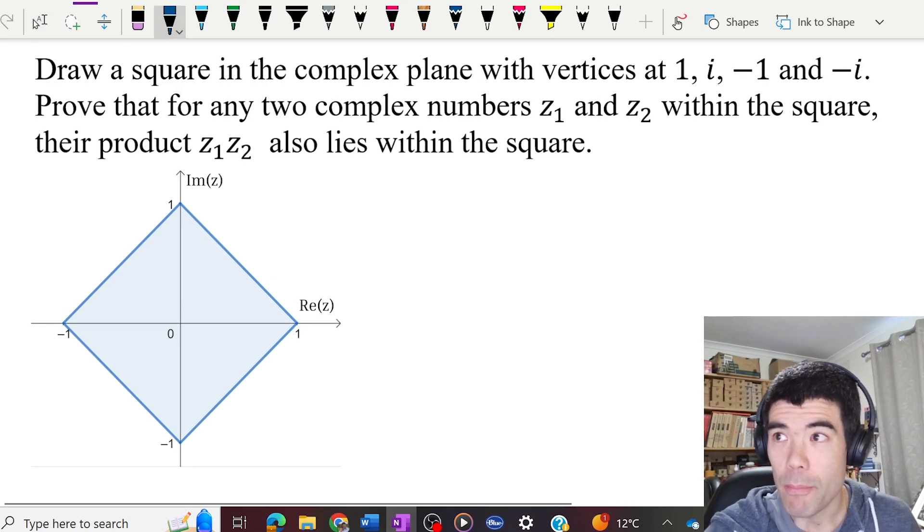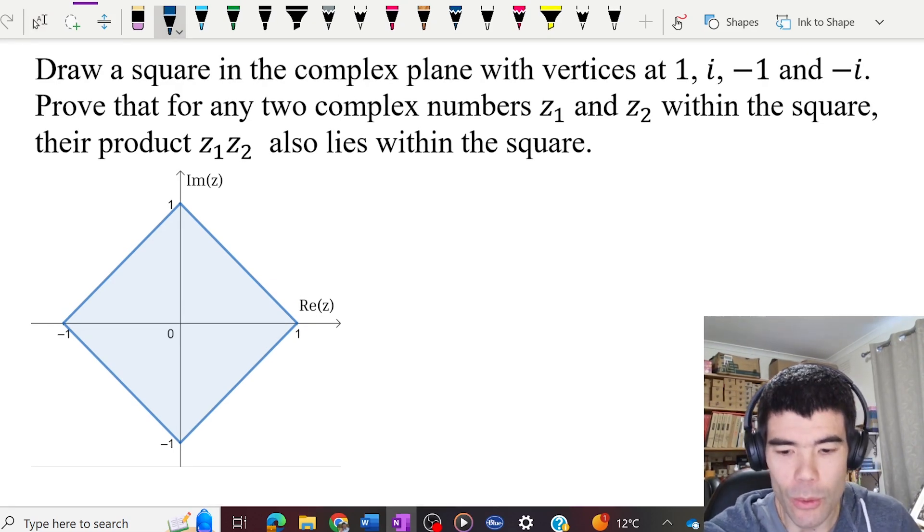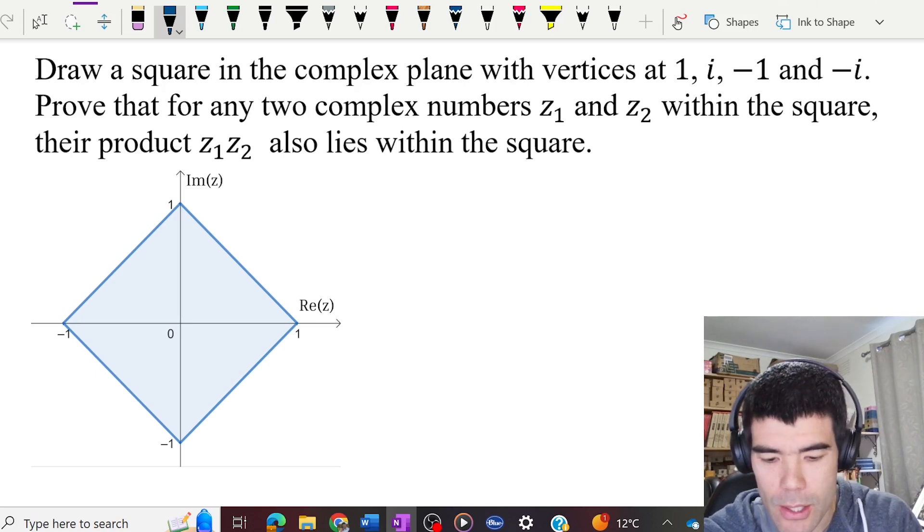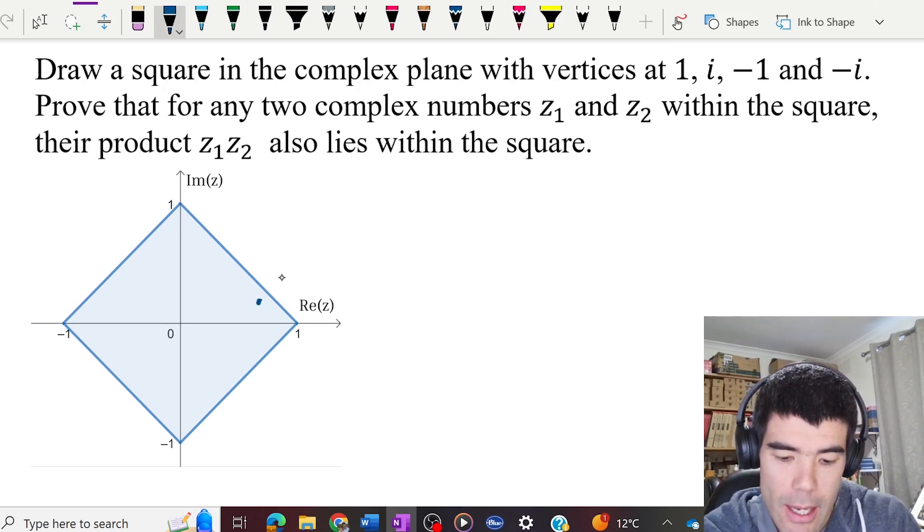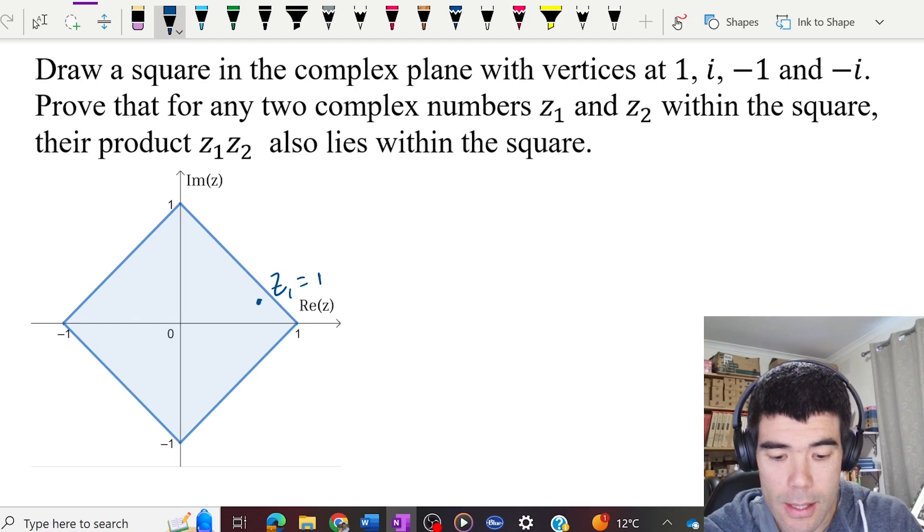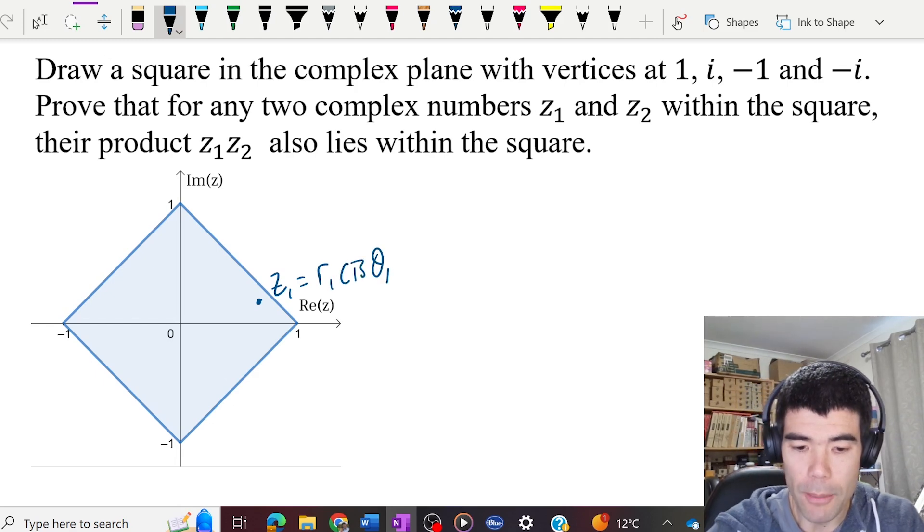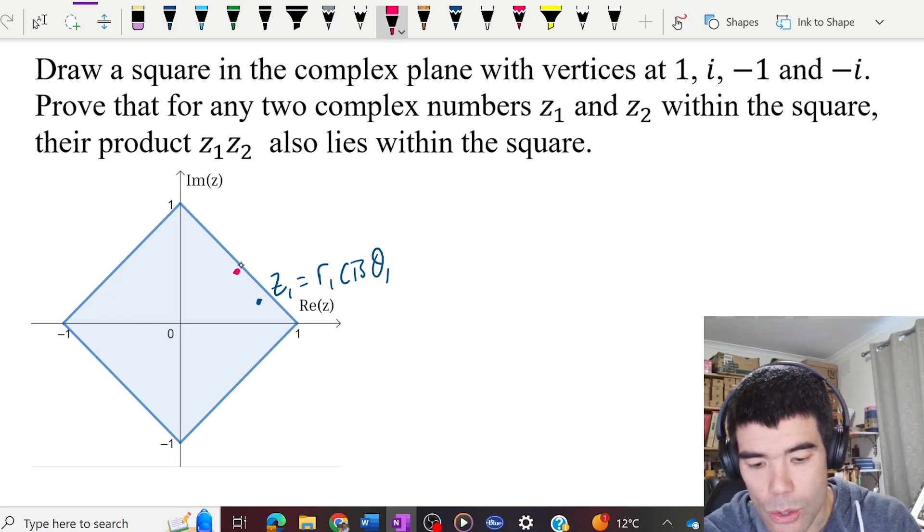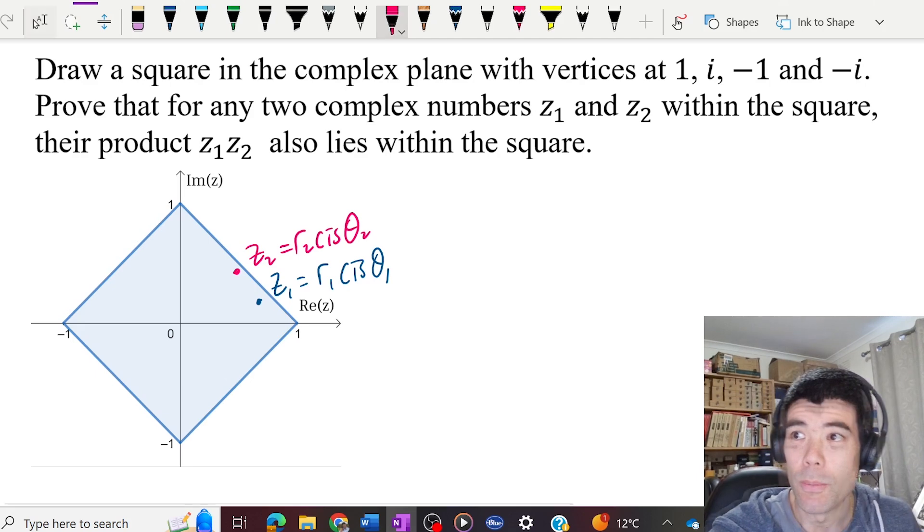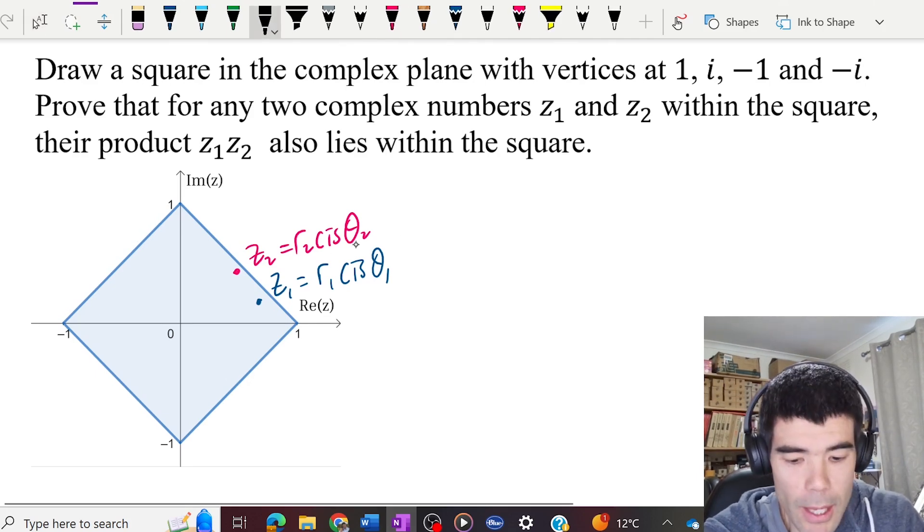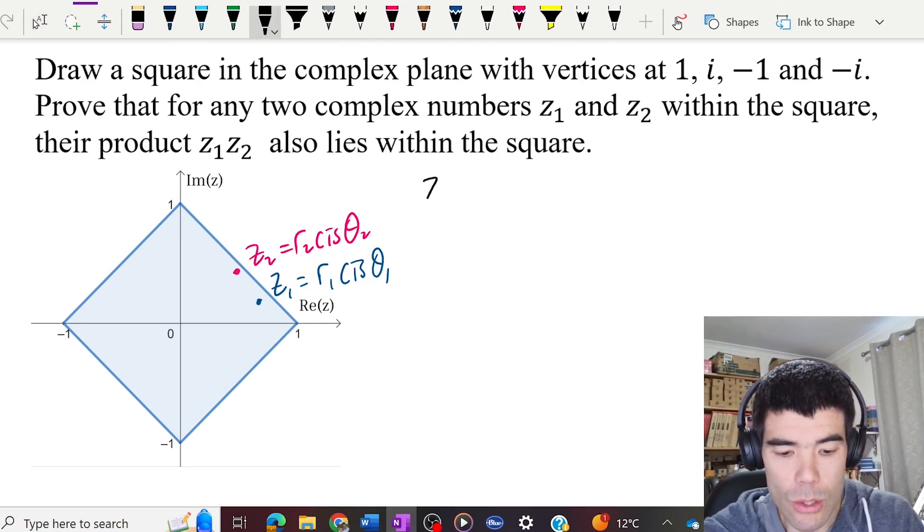When I first read this problem, I thought it should be very straightforward. We just use polar form, right? So multiply the lengths and add the angle. Let's say z1 here is r1 cis θ1 and z2 is r2 cis θ2. The product then we just multiply r1 r2 and add the angles θ1 and θ2.